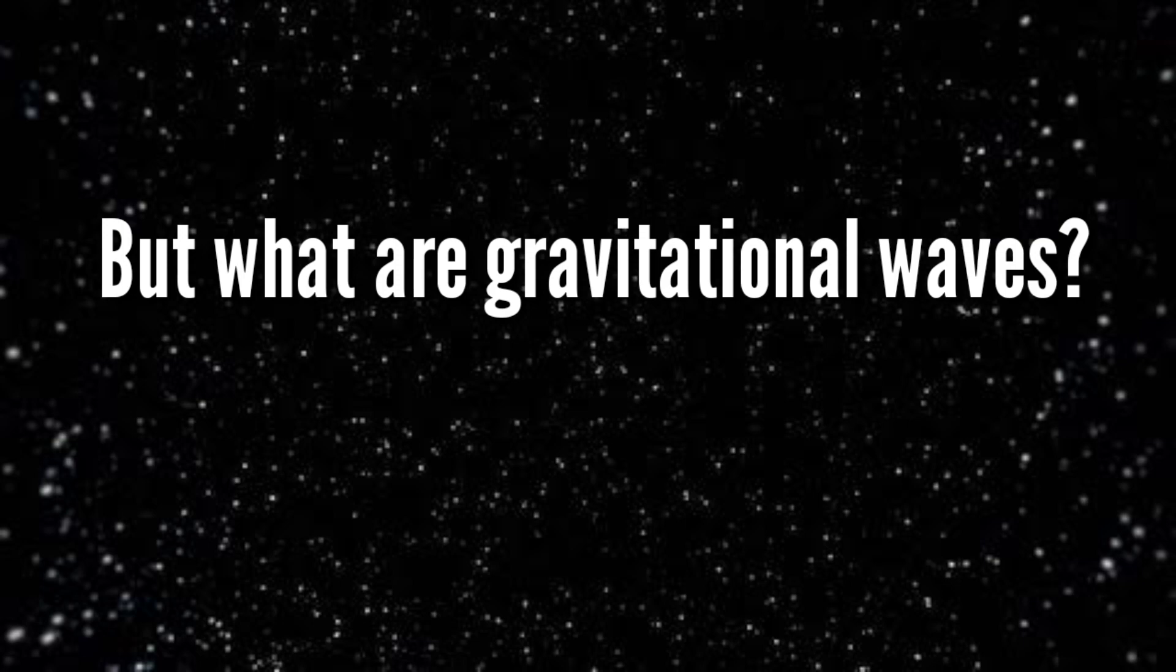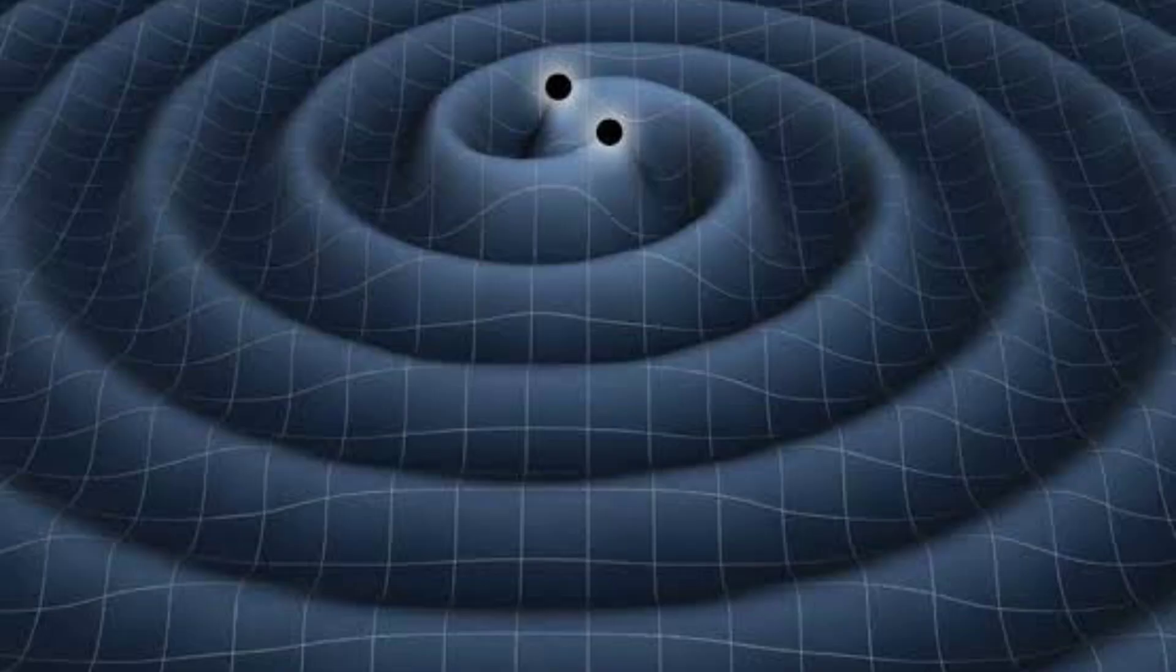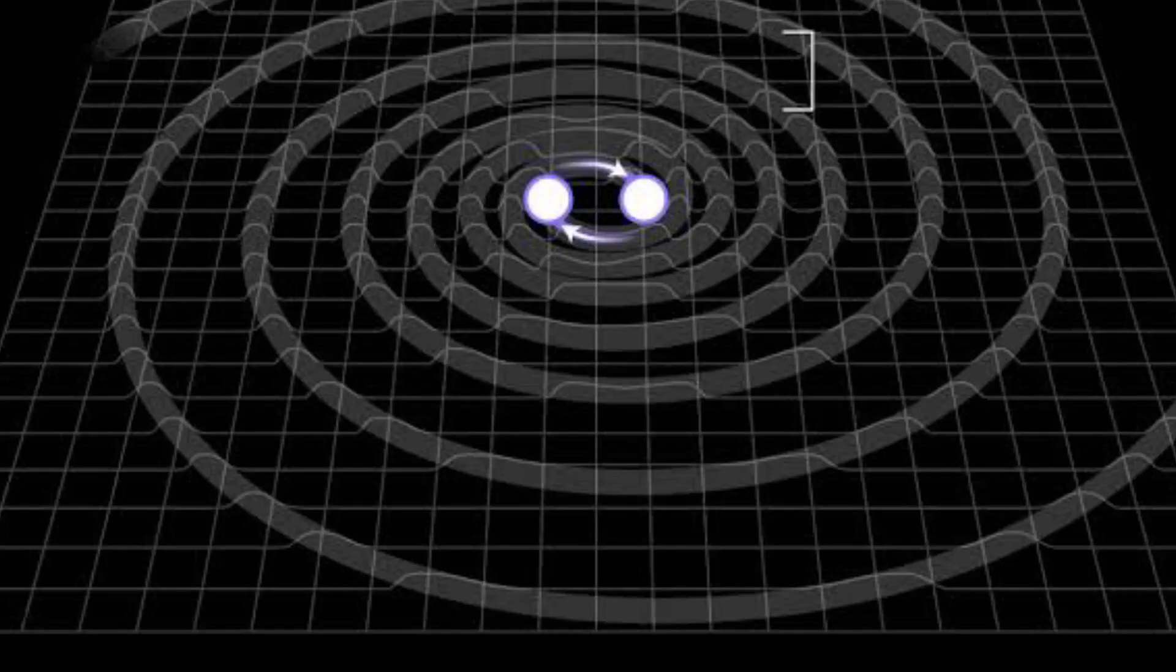These waves are disturbances in the curvature of space-time generated by accelerated masses that propagate outward from their source at the speed of light. For an analogy, you can think of ripples created on a pond surface when you throw a stone.